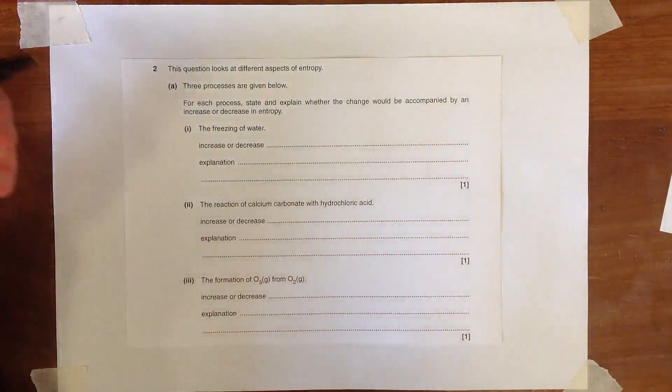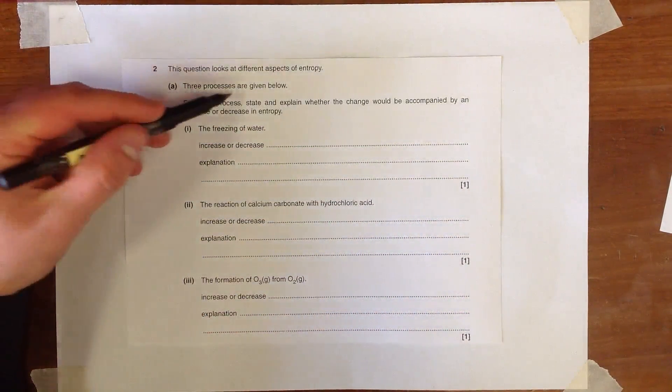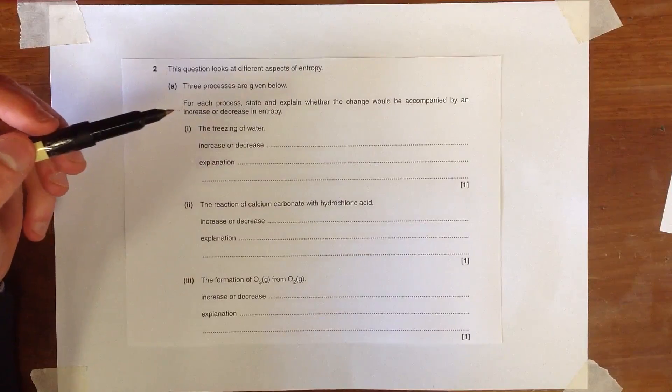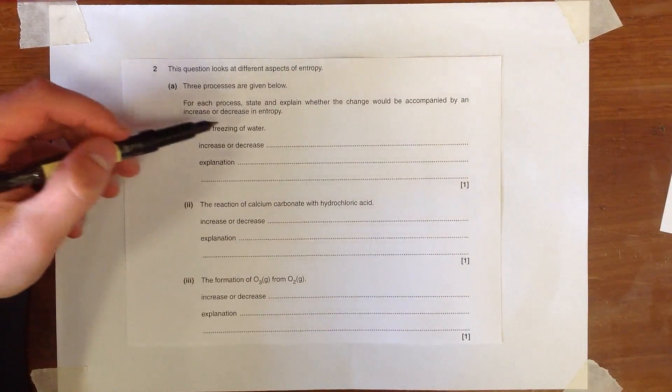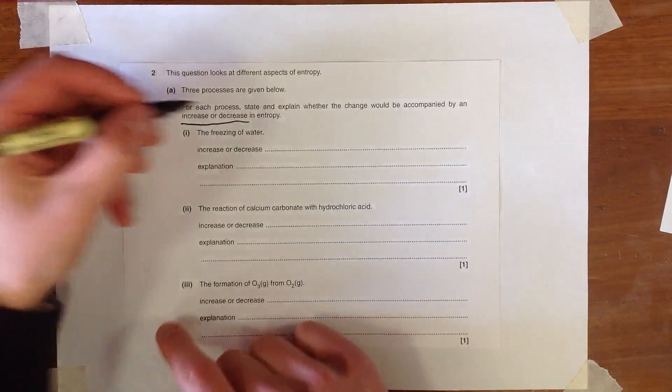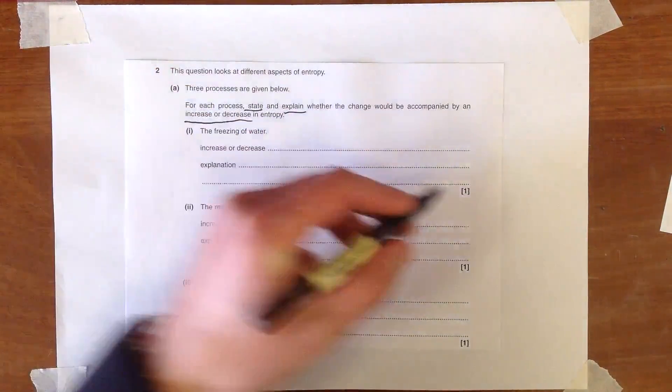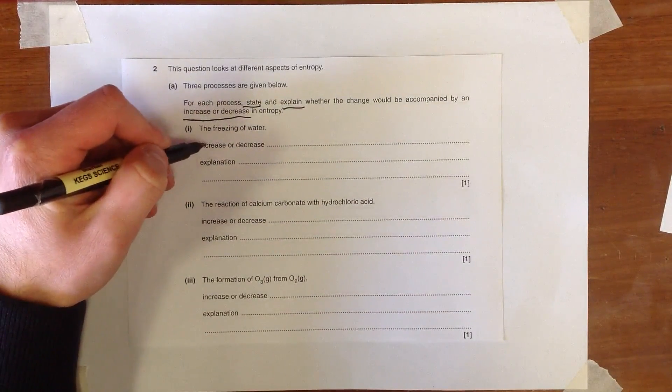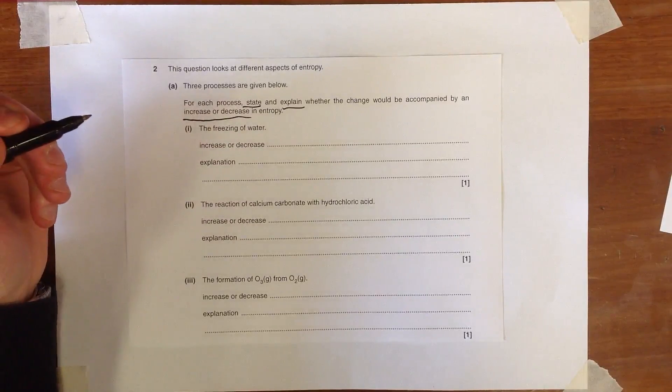Question 2. The first part of this question, we're being told about three processes, and we're supposed to state and explain whether the change would be accompanied by an increase or a decrease in entropy. State and explain. And as there's only one mark for each, we can assume that we're going to have to have the statement and the explanation to get the mark.